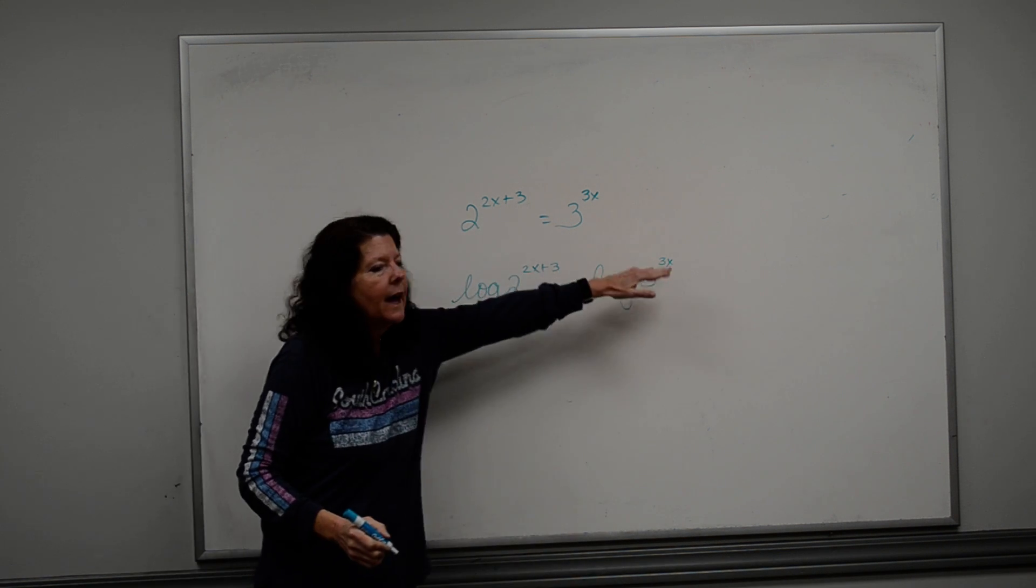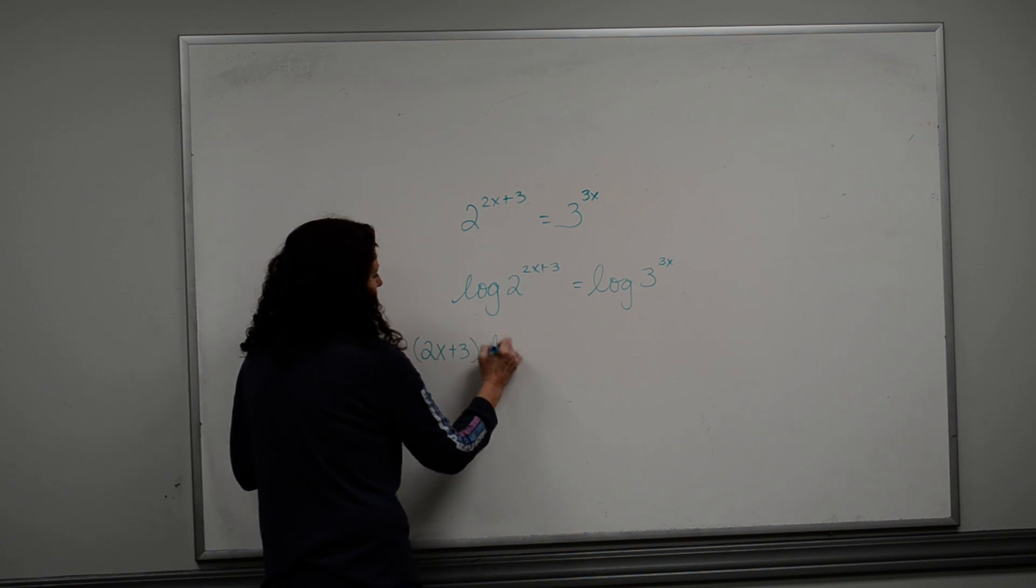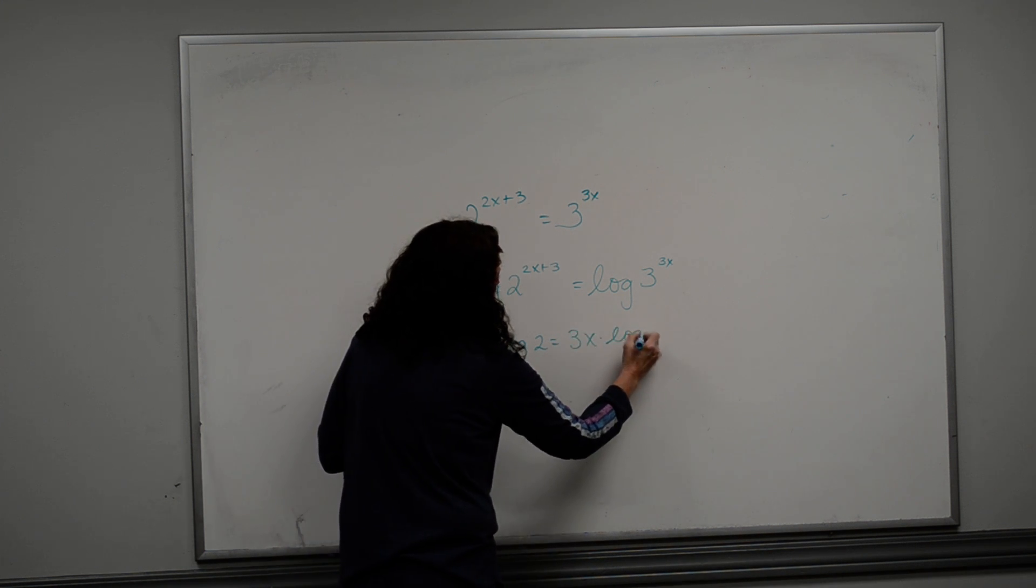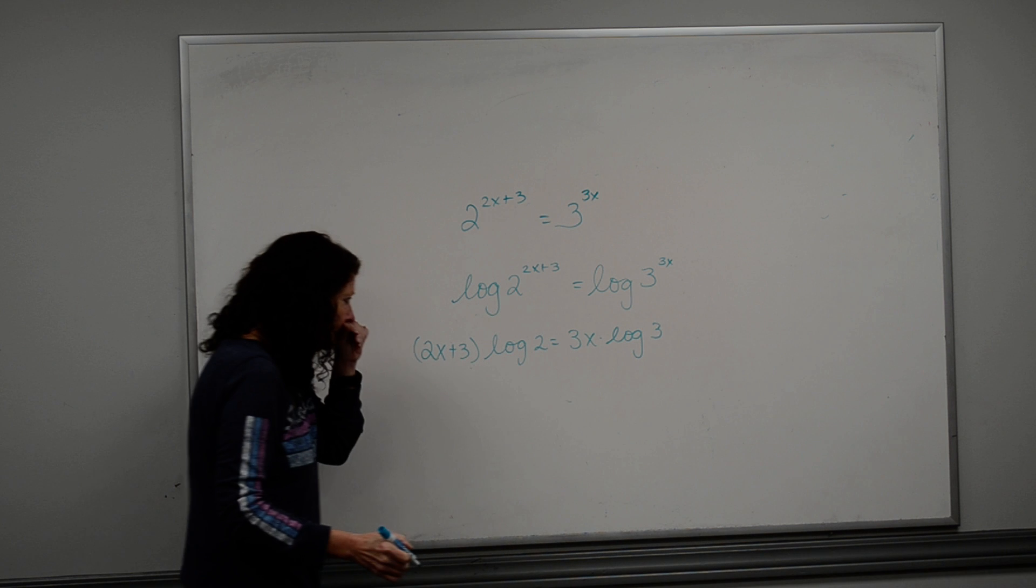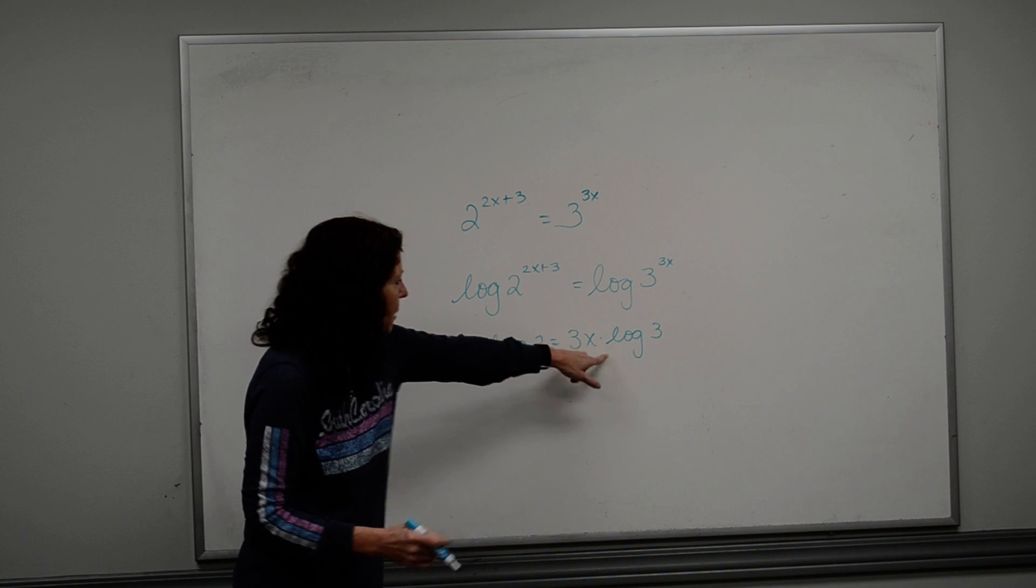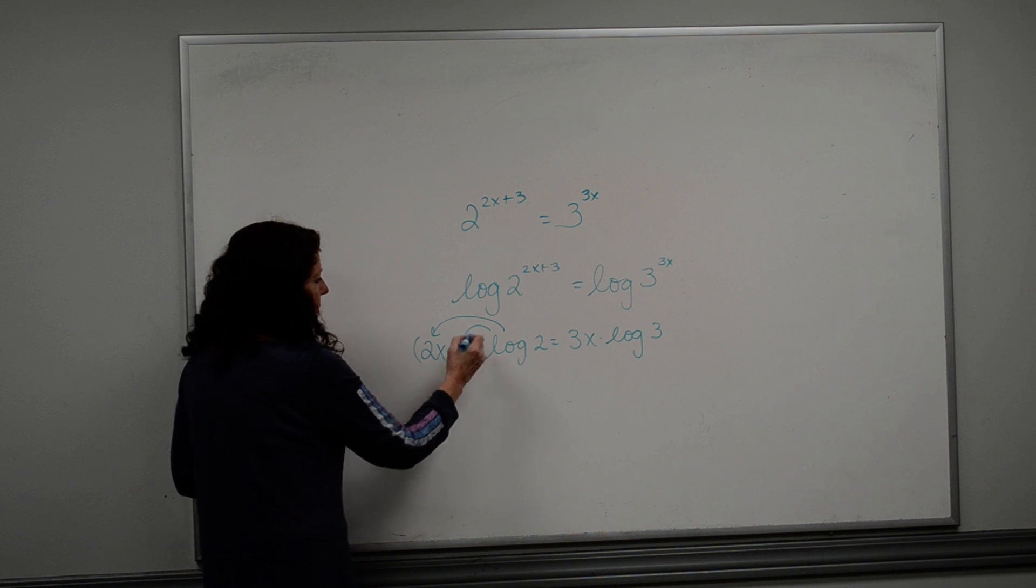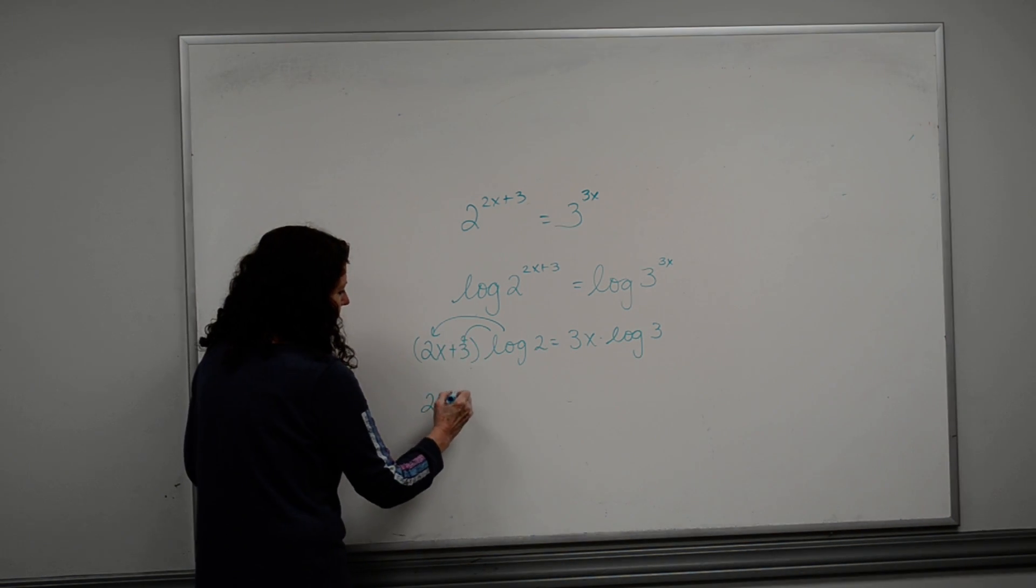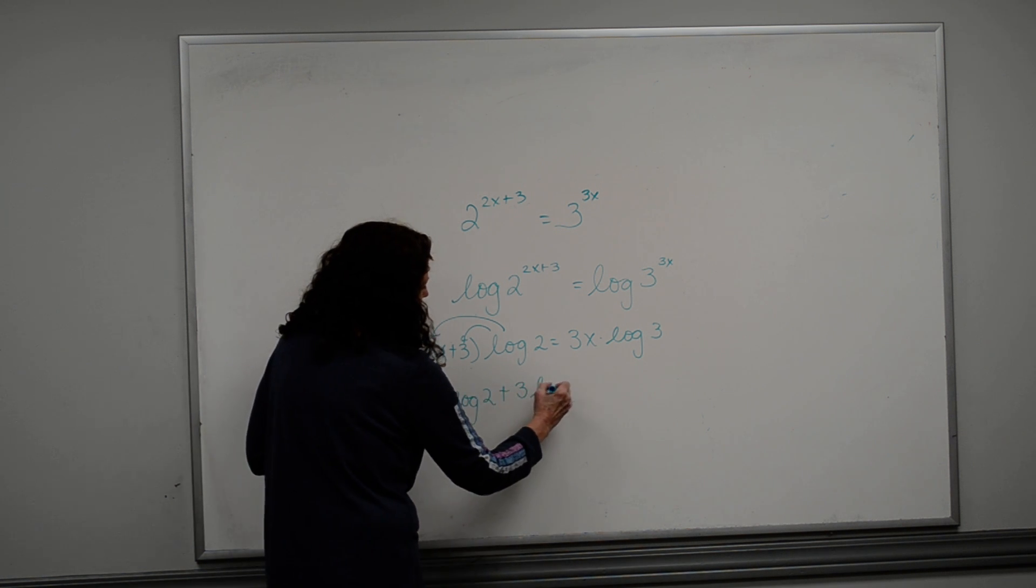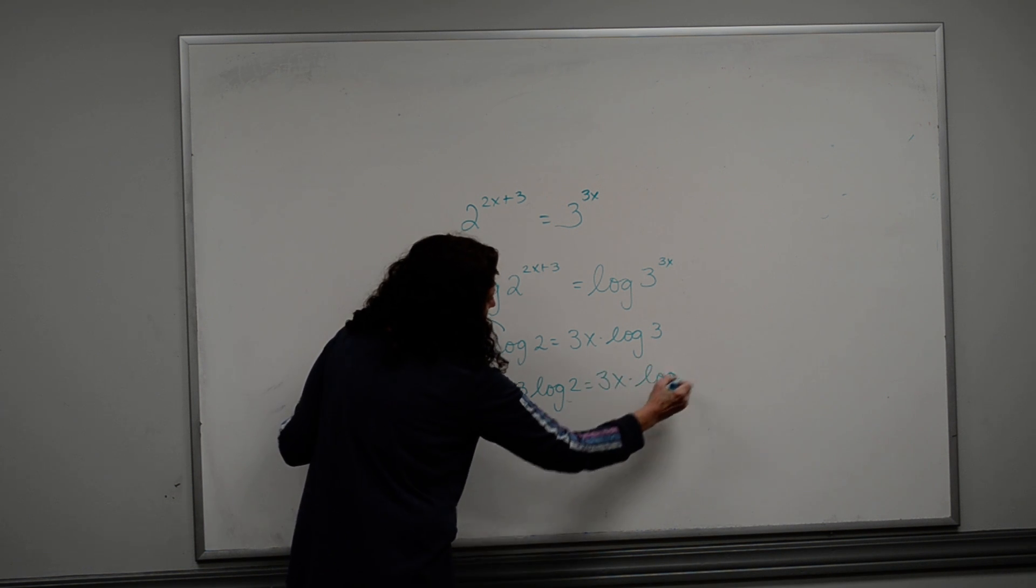Your exponents have to be brought to the front, so I have a 2x plus 3 times the log of 2 is equal to a 3x times the log of 3. I don't have to distribute that one, but I do have to distribute this one. So I've got the log of 2 that I'm going to multiply by both sides, so this is going to be 2x times the log of 2 plus 3 times the log of 2 is equal to 3x times the log of 3.